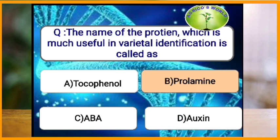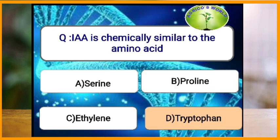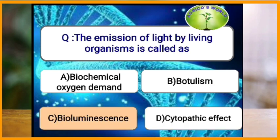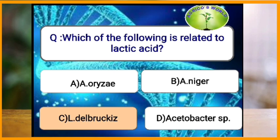The protein most useful in varietal identification is prolamine. IAA (indoleacetic acid) is chemically similar to which amino acid? IAA is similar to tryptophan. The emission of light by living organisms is called bioluminescence. Lactobacillus delbrueckii and Lactobacillus bulgaricus are related to lactic acid fermentation.